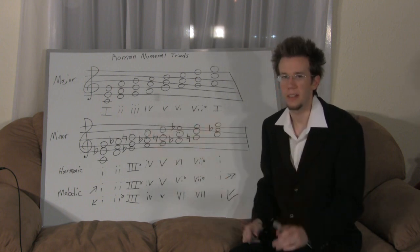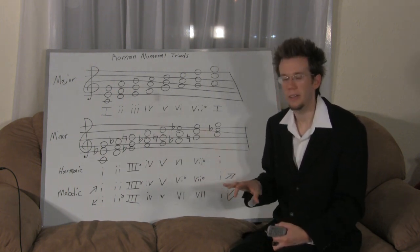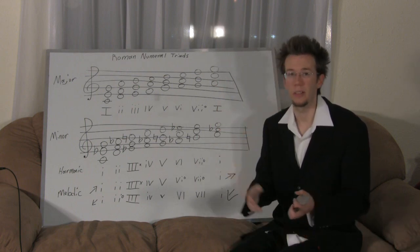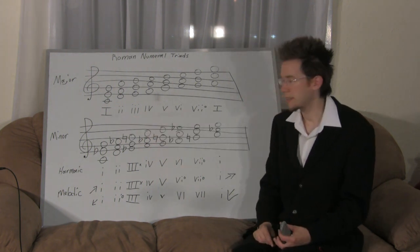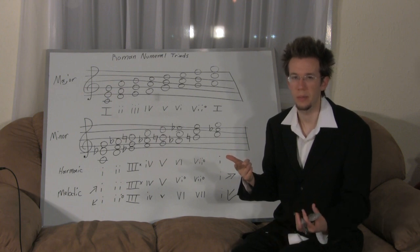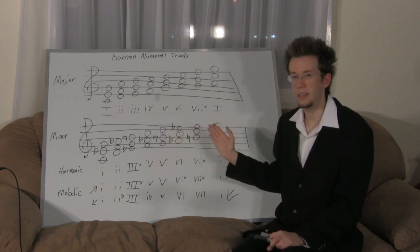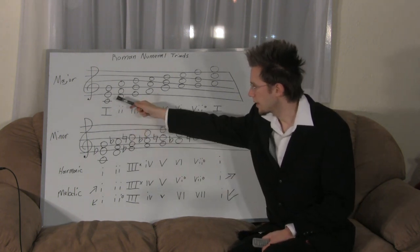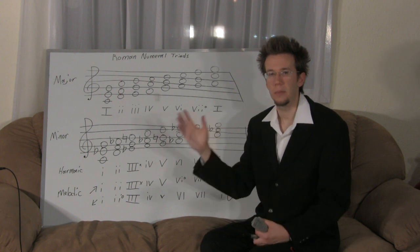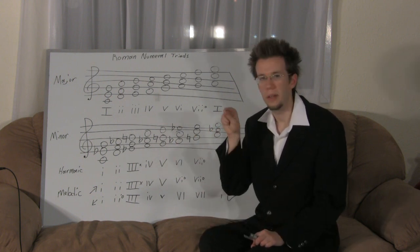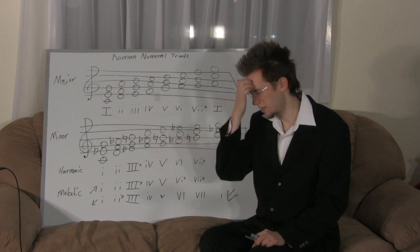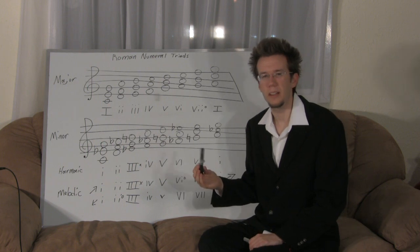All major scales follow the same pattern — the first chord of any major key, whether C major, G major, A major, or B-flat major, is always major. This is called the tonic chord, just like the first scale degree is the tonic. The chord number corresponds to the scale degree, so roman numeral I is the tonic chord.